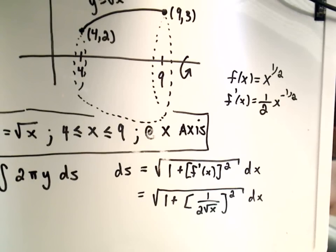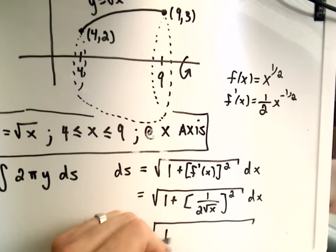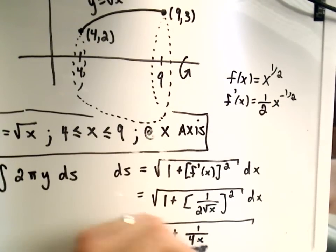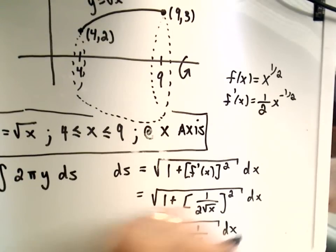Okay, so if we simplify the stuff underneath the square root, it looks like we get 1 plus 1 over... we have to square both parts, so we'll get 4x, made my square root a little big there, dx.